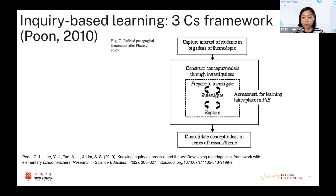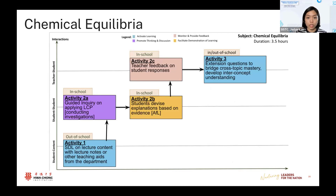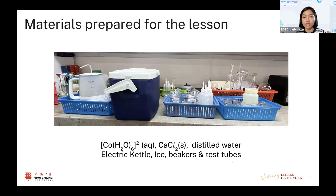The research paper for this framework is also in the resource folder if you're interested. Using the three Cs, I prepared this lesson — I won't delve into all the details. I just want to give you a visual understanding of what I prepared. There are two main investigations for students, which means quite a bit of materials to prepare. It is mainly regarding cobalt 2+ complexes.